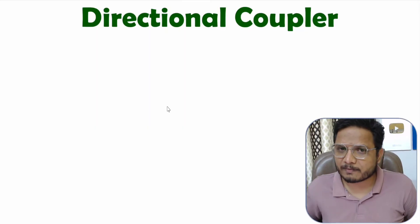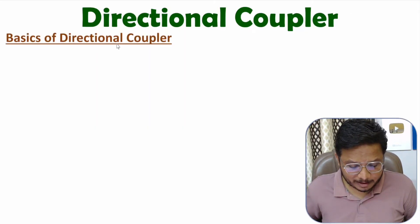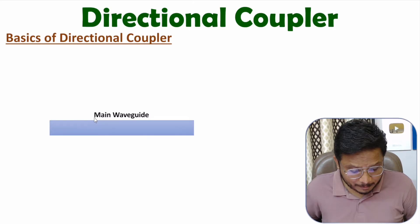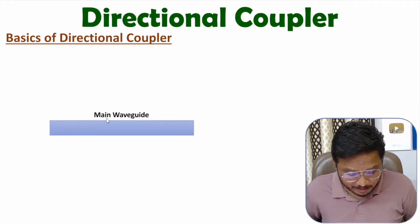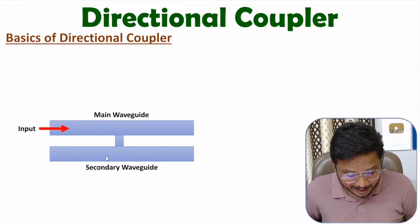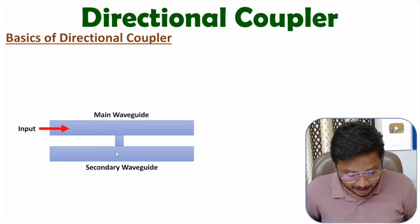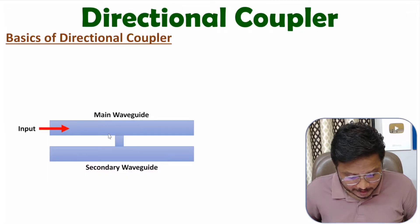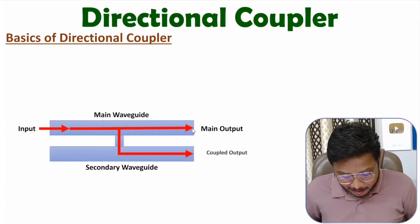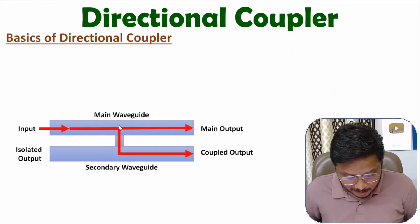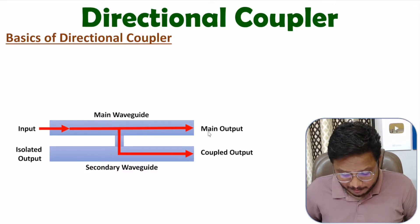Let us begin with the basics of directional coupler. In a directional coupler, we have a main waveguide to which we give the input signal, and we also have a secondary waveguide connected to the main waveguide. This connection provides flow of signal in the secondary waveguide as well, so the input signal appears at the main waveguide output and is also coupled into the secondary waveguide, giving us a coupled output and a main output.